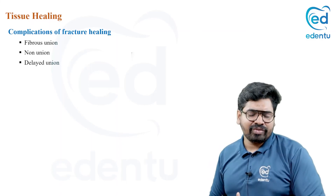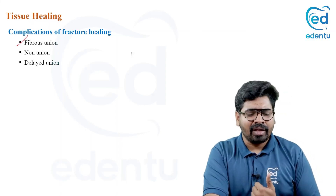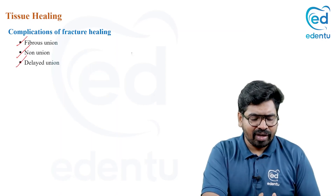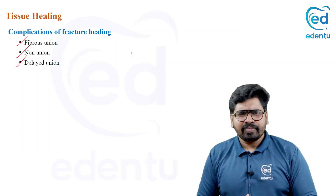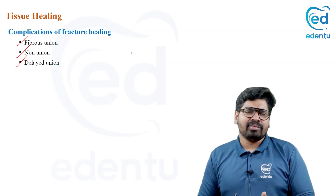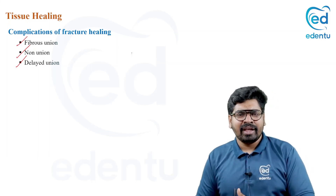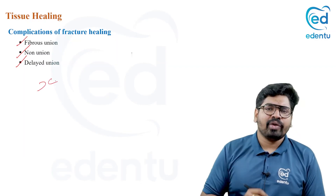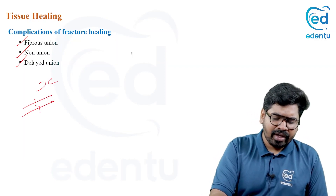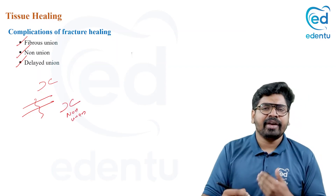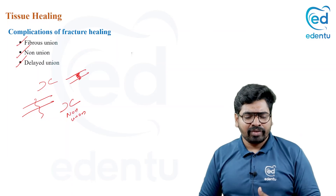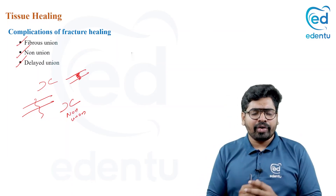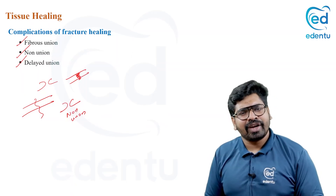Complications of fracture healing include: non-union, where the bone fails to fuse and remains separate; delayed union, where fusion takes longer than expected (seen in elderly or malnourished patients); and fibrous union, where the fracture site is joined by fibrous tissue rather than bone. These are the complications of fracture healing. I hope you understood tissue healing — see you in the next video.